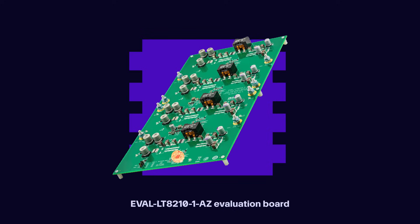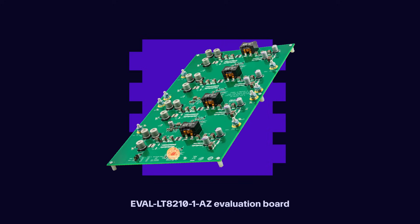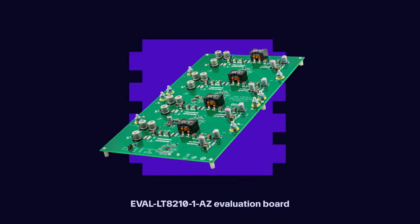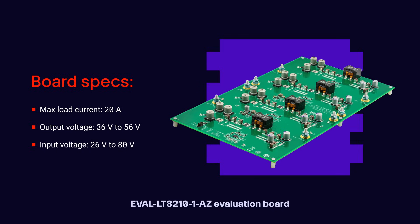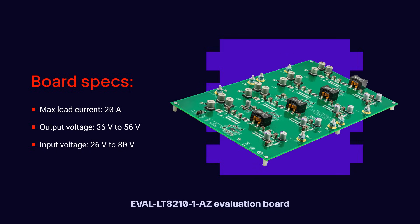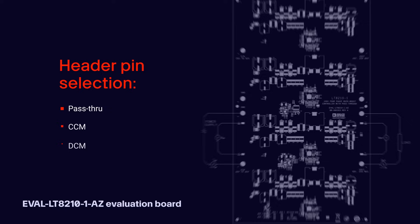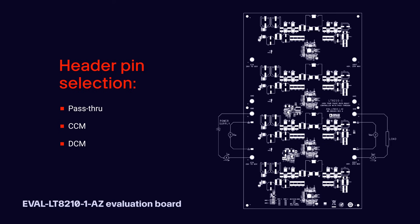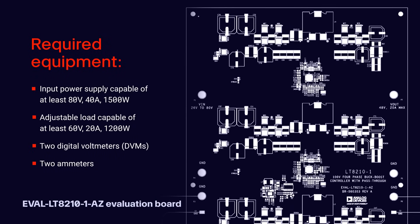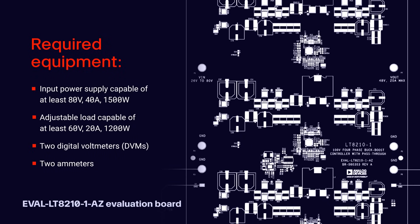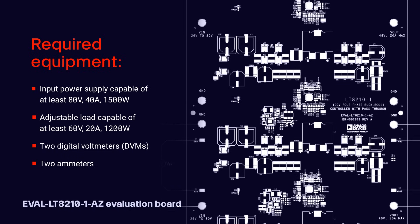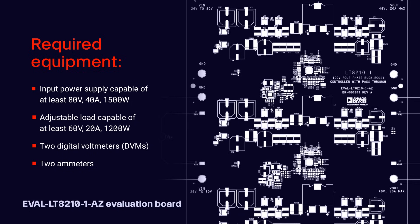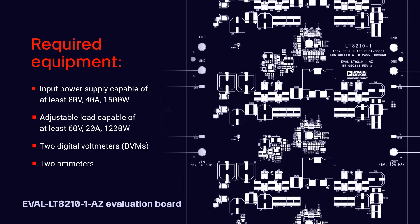Analog Devices offers an evaluation board with four LT8210-1 controllers operating in a multi-phase leaderless configuration to supply a load current up to 20 amps at 36 to 56 volts out while operating from a 26 to 80 volt supply. It includes header pins to select from all three operating modes: pass-through, CCM, and DCM. Phase clocks are generated by an LTC6902, so all that's required is a power supply, load, voltmeters, and ammeters. Then users can easily evaluate the efficiency and performance for each mode with different input and load settings.